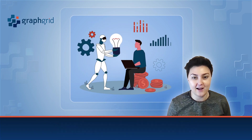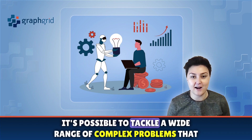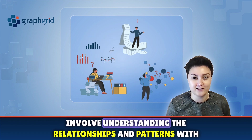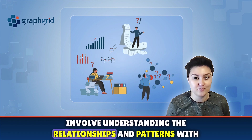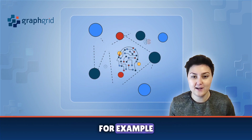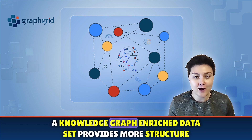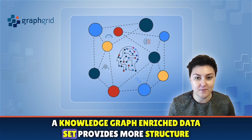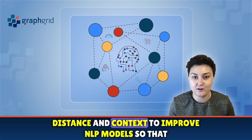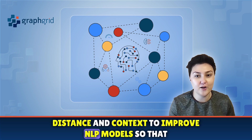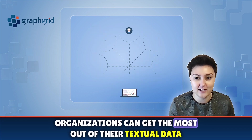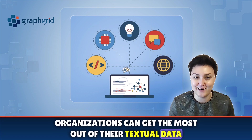When combining Graph and AI, it's possible to tackle a wide range of complex problems that involve understanding the relationships and patterns within interconnected data. For example, a knowledge graph-enriched dataset provides more structure, distance, and context to improve NLP models so that organizations can get the most out of their textual data.